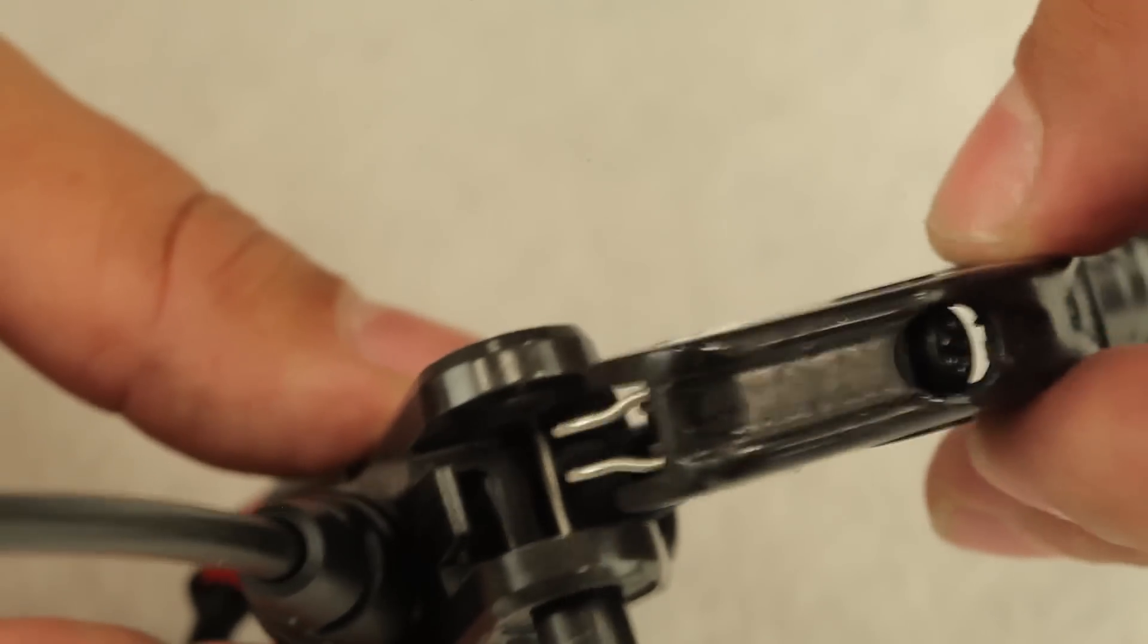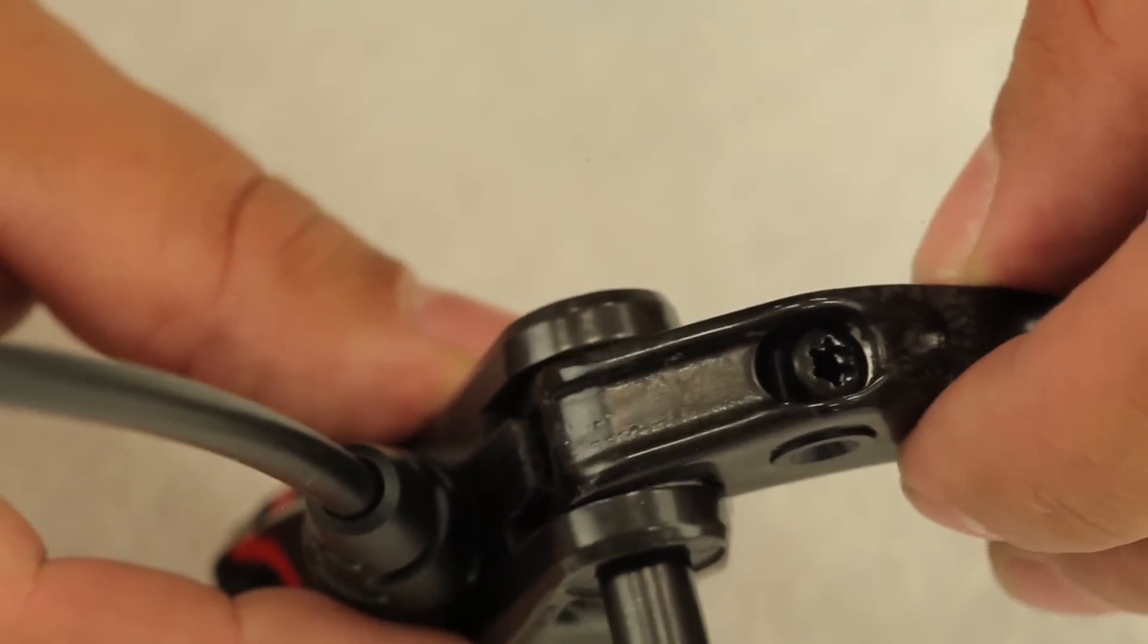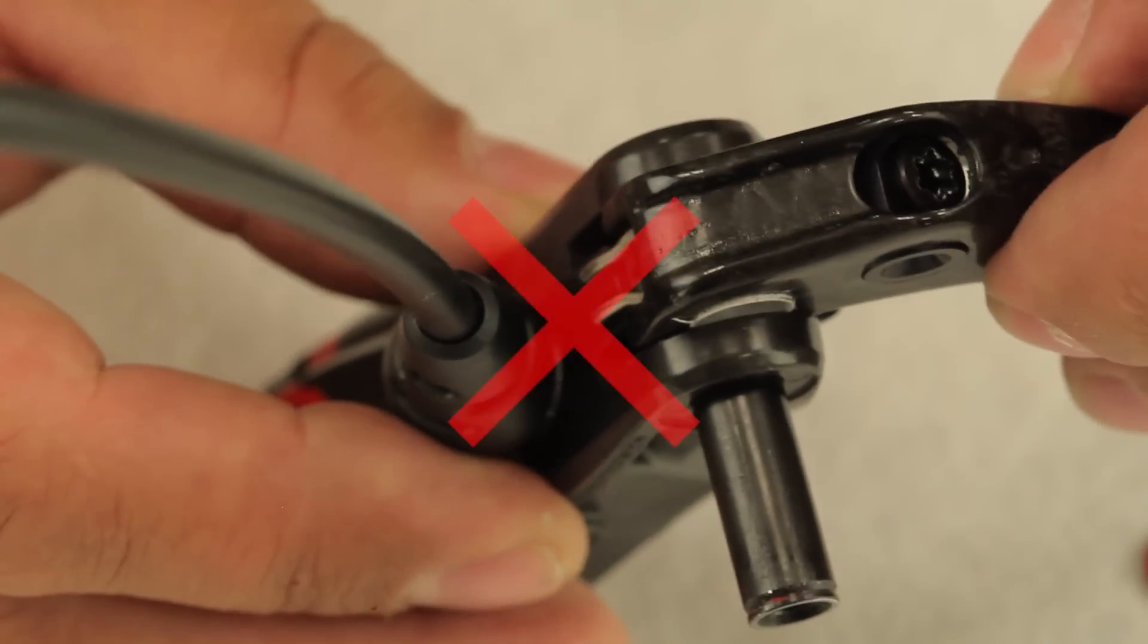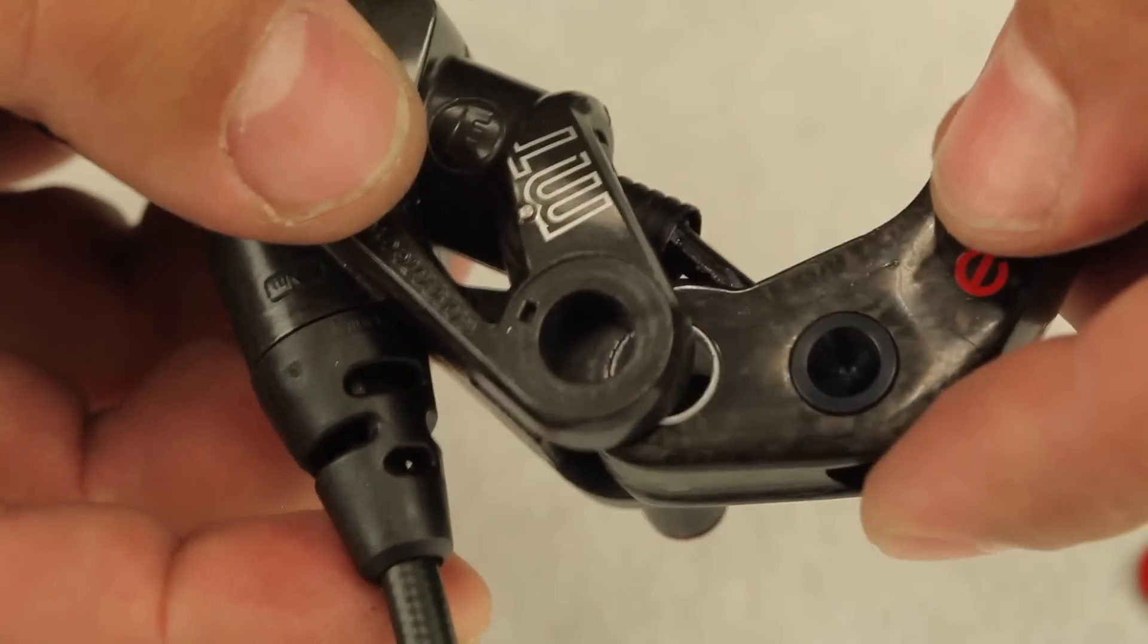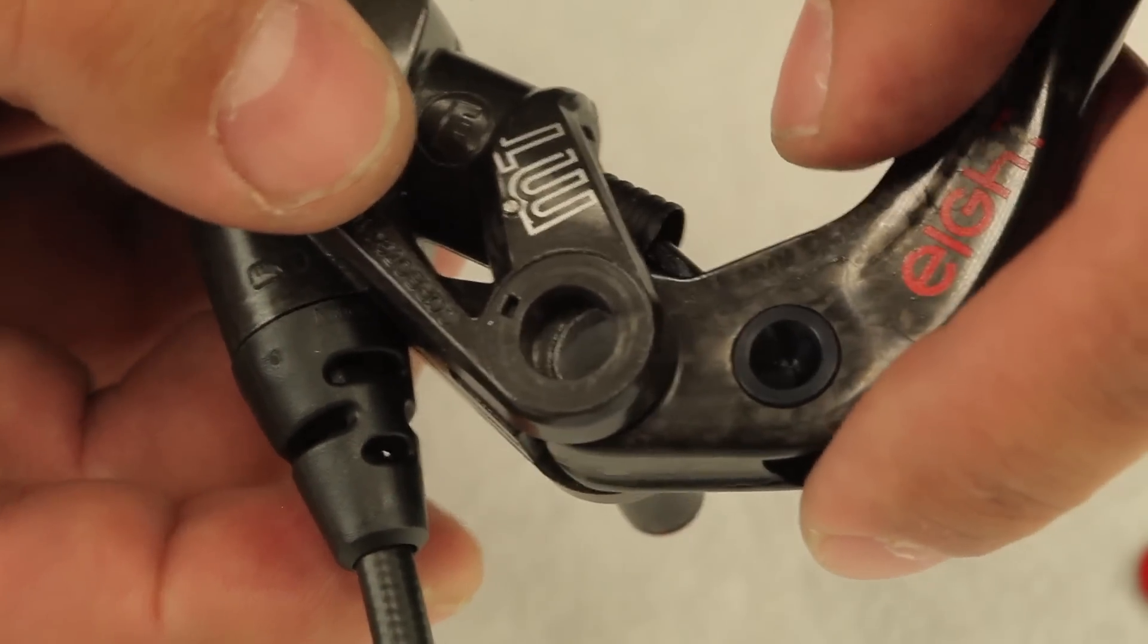When remounting a lever blade ensure that the returning spring engages behind the latch of the master housing, otherwise the lever would not function properly, and set the reach adjust bolt with its round head into the piston.